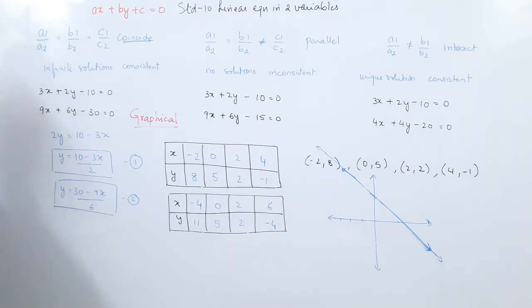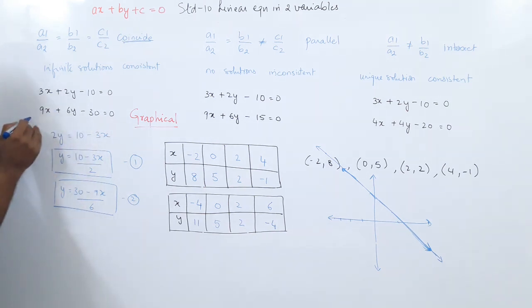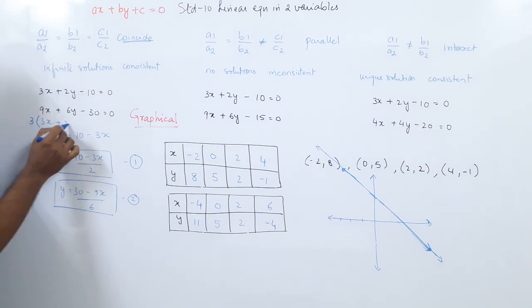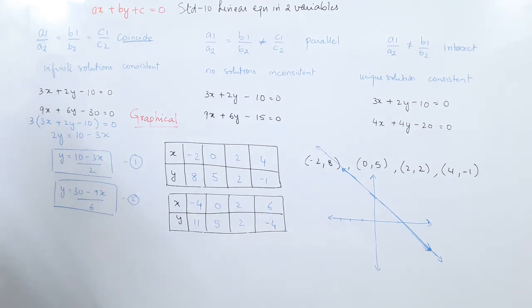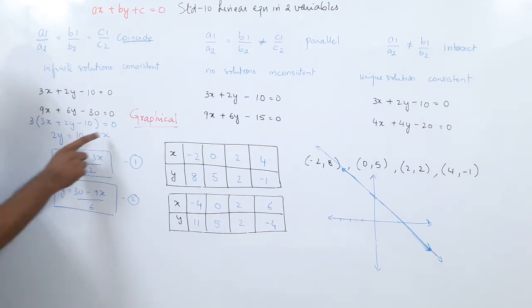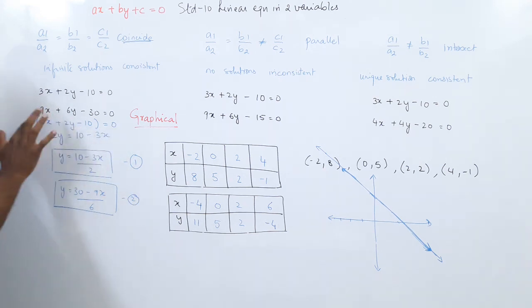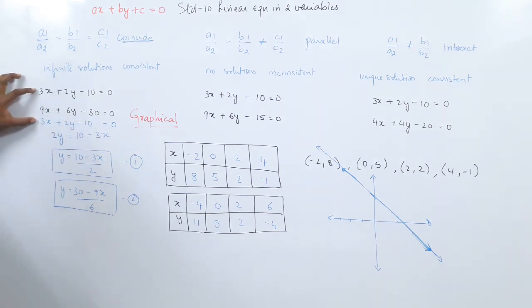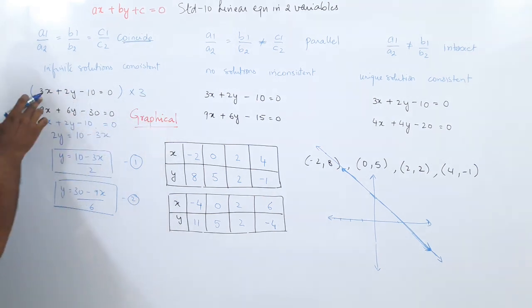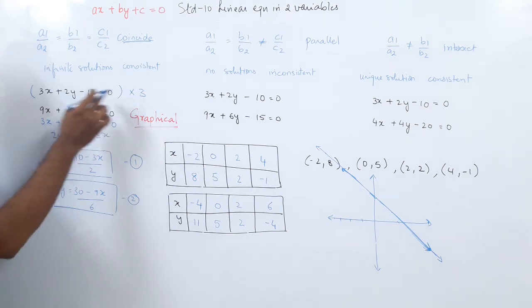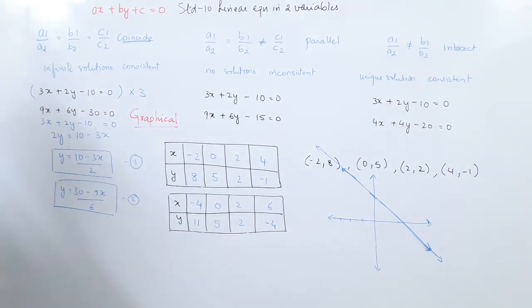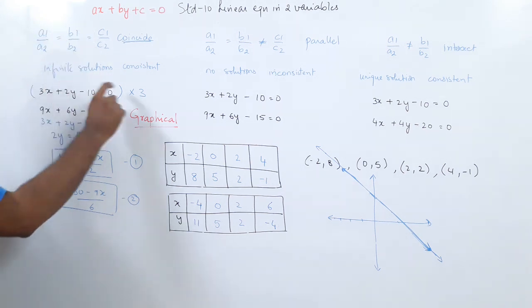In the second equation, if I take 3 as a common factor outside, I get 3(3x + 2y − 10) = 0, which simplifies to 3x + 2y − 10 = 0 — the same as the first equation. Alternatively, if I multiply the first equation by 3: 3 × (3x + 2y − 10) = 9x + 6y − 30 = 0. So these two lines are one and the same line with a common factor, which you get from a1/a2 = b1/b2 = c1/c2.